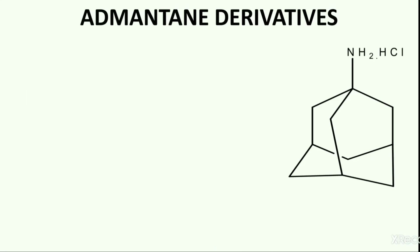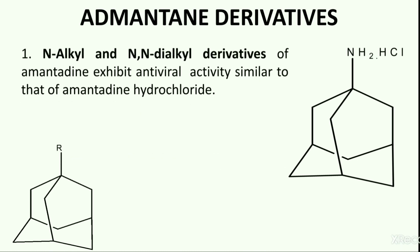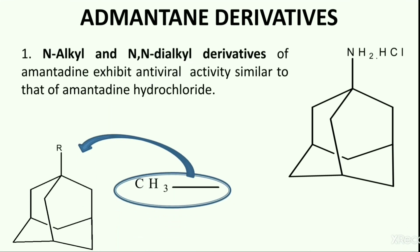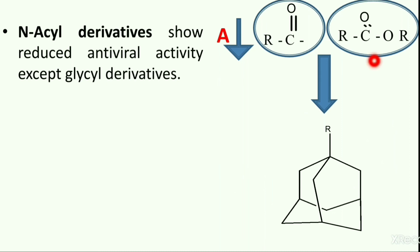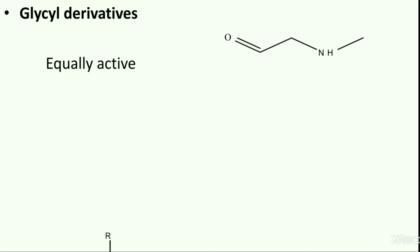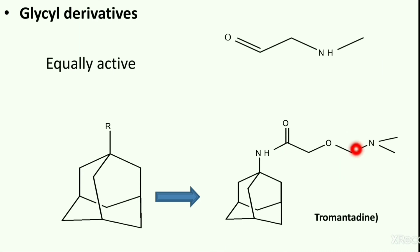Next, the structure activity relationship of antiviral adamantane derivatives. Amantadine is an antiviral agent with mild anti-Parkinson's activity. Various research studies suggest that N-alkyl and N,N-dialkyl derivatives of amantadine exhibit antiviral activity similar to that of amantadine hydrochloride. In case of N-acyl derivatives of amantadine, reduced antiviral activity is observed. However, glycyl derivatives showed activity; in the case of glycyl derivatives such as tromantadine, antiviral activity was observed and activity is equal to other potent adamantane derivatives.